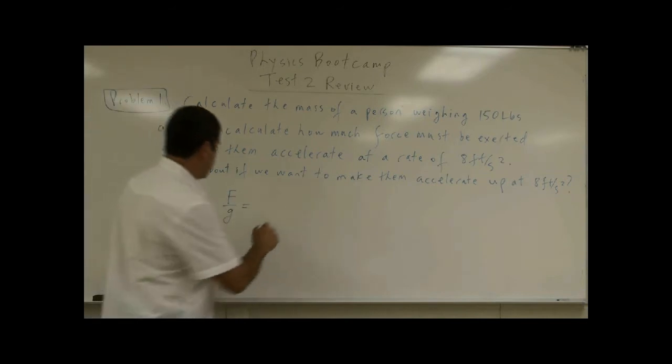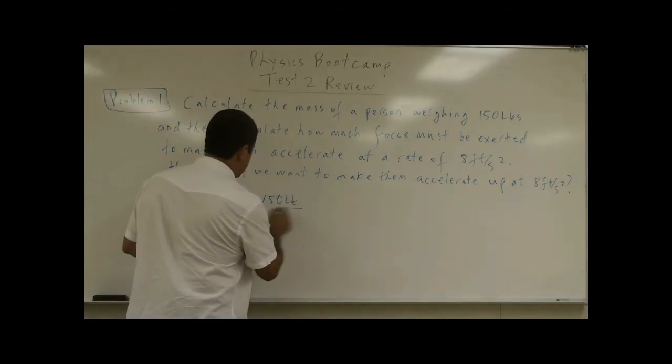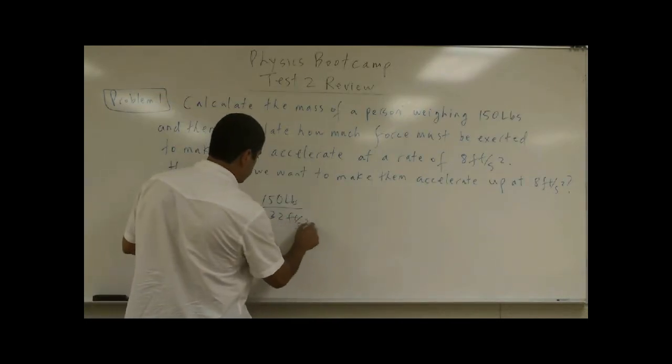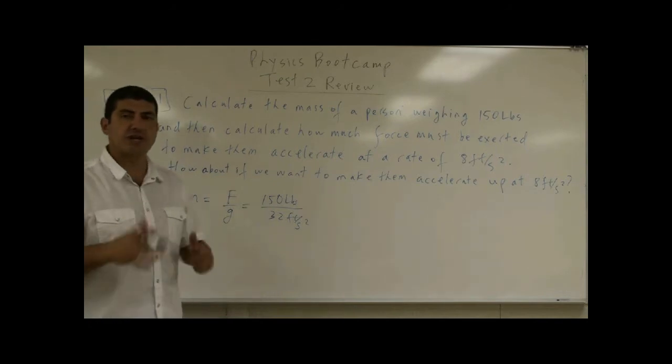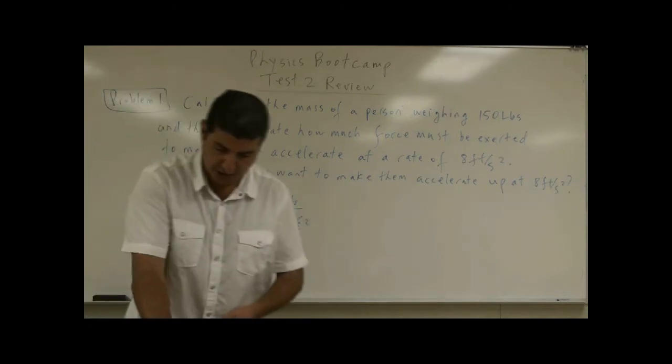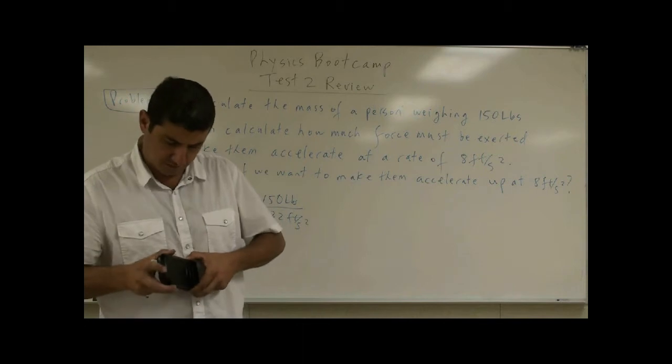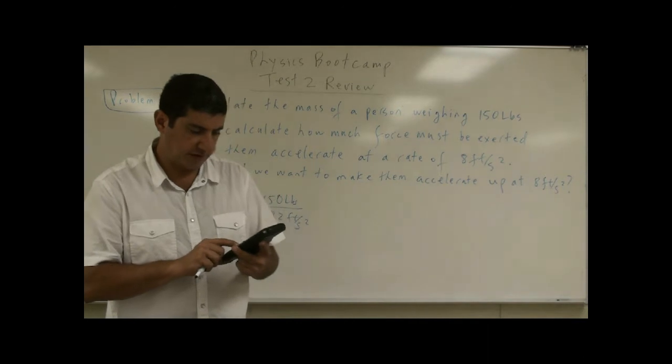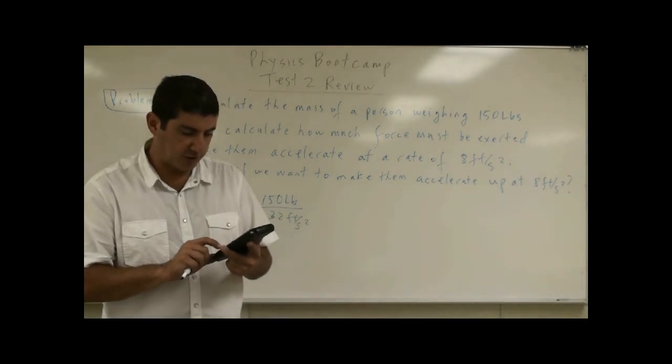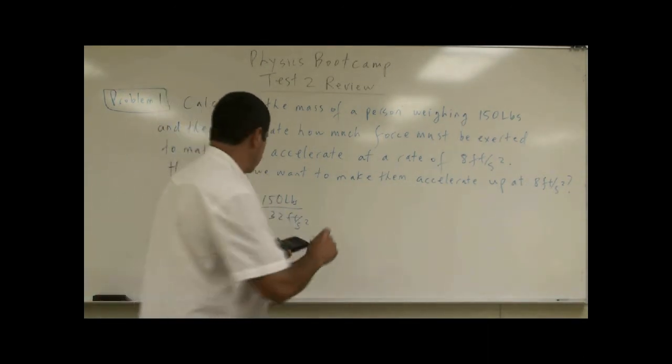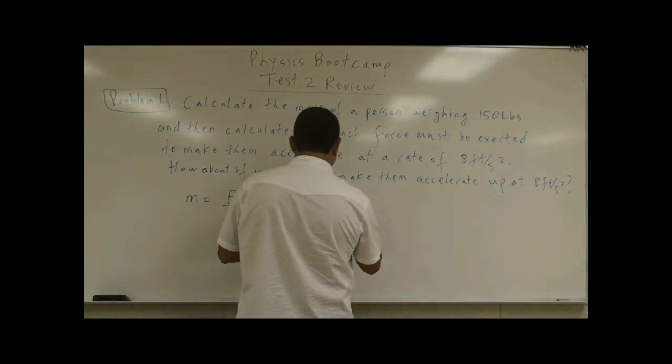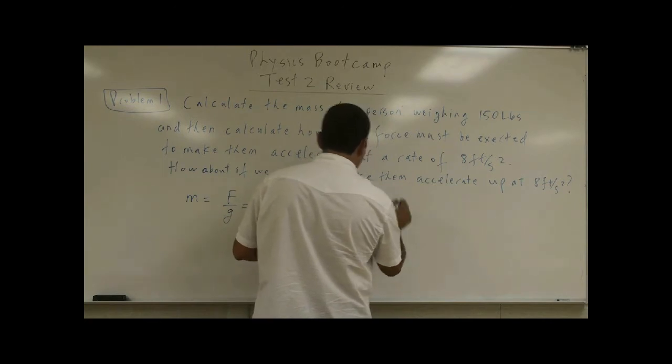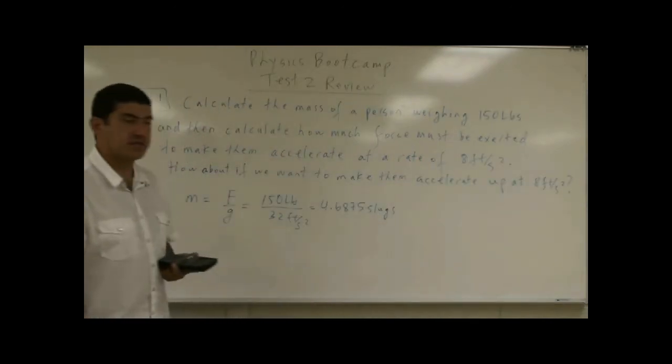So since they weigh 150 pounds, the acceleration of gravity is 32 feet per second squared. When you divide that, you get units of slugs. So let's do this. 150 divided by 32, 4.6875 slugs. So the person has a mass of 4.6875 slugs.